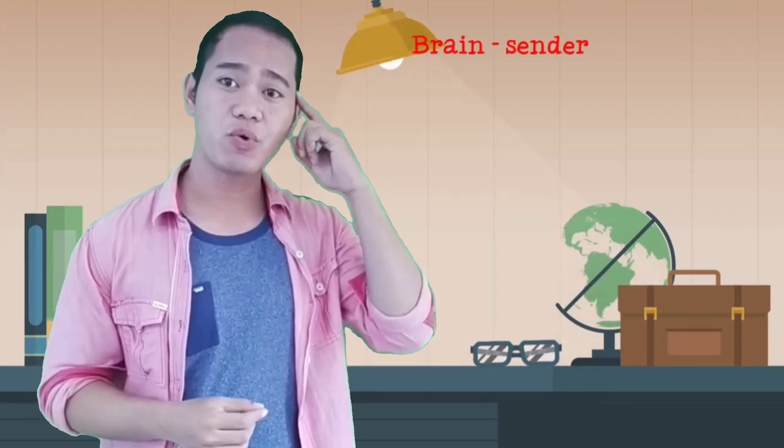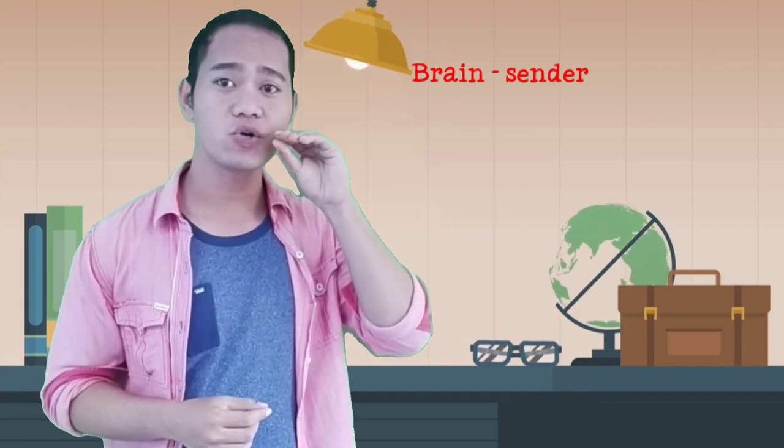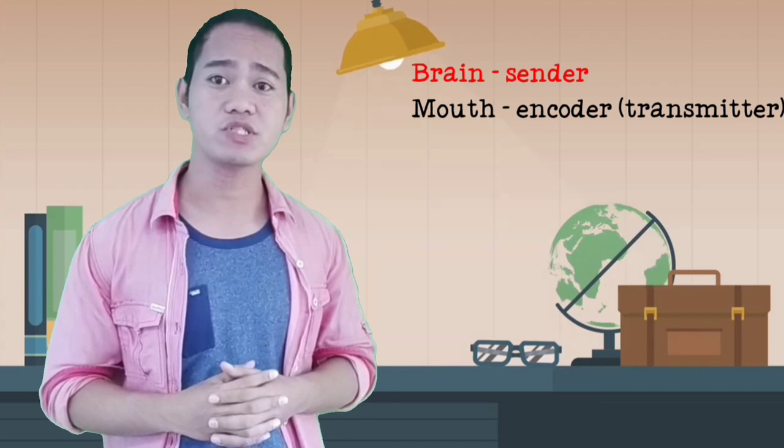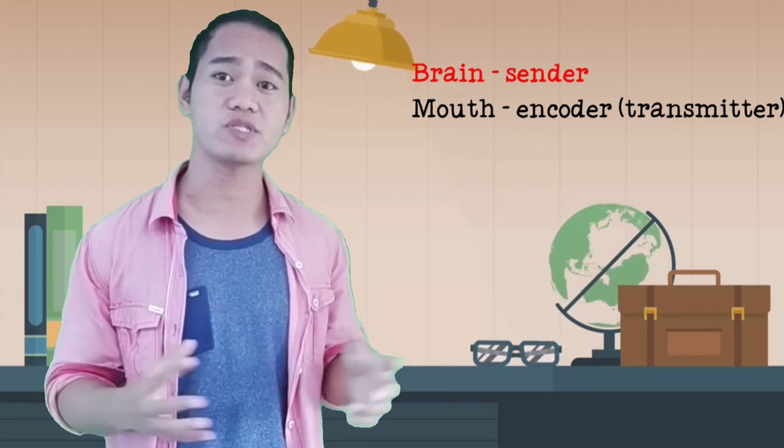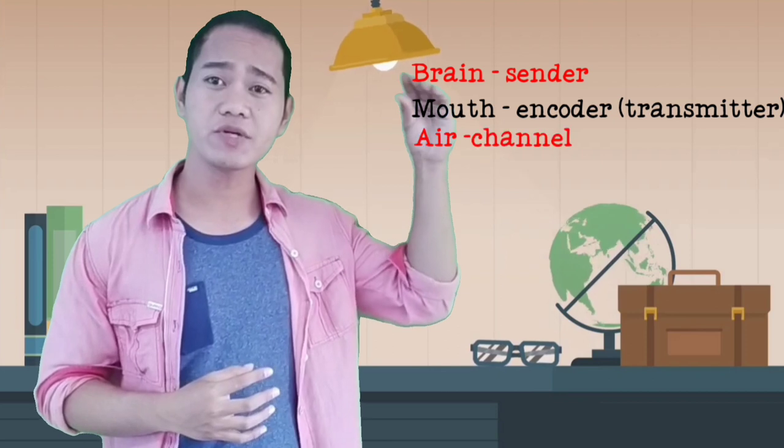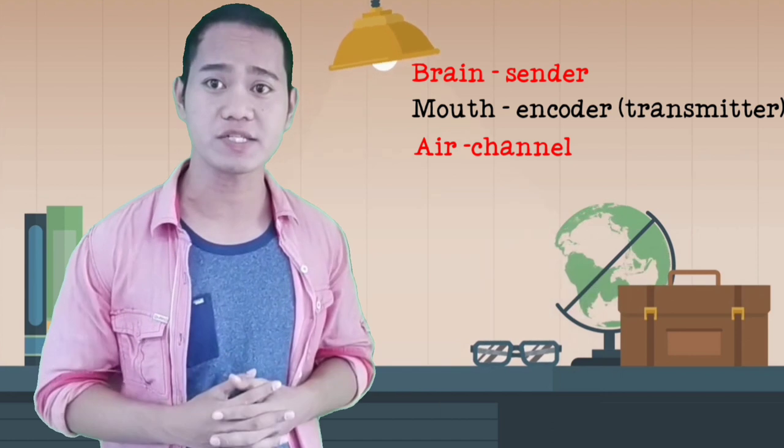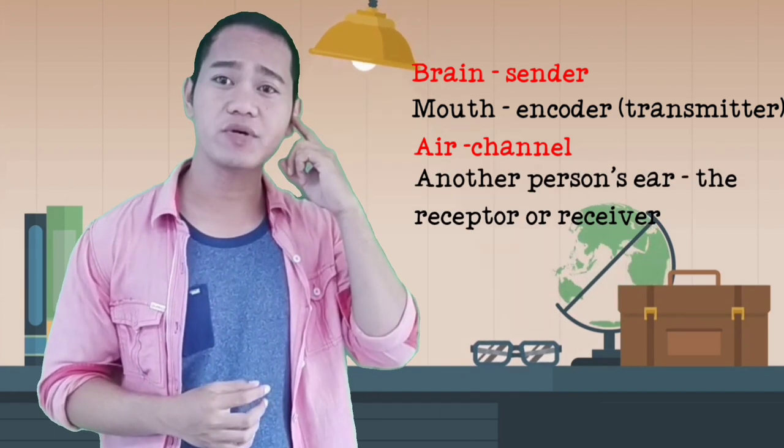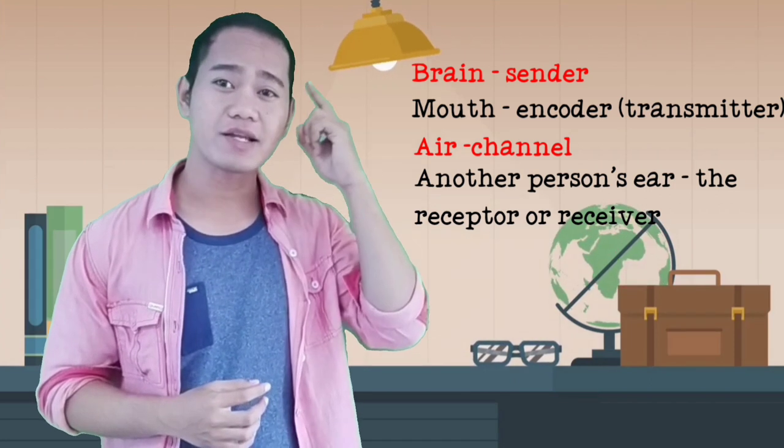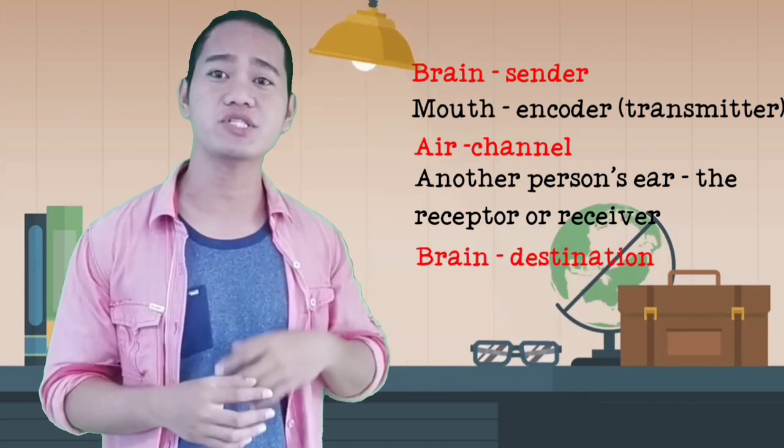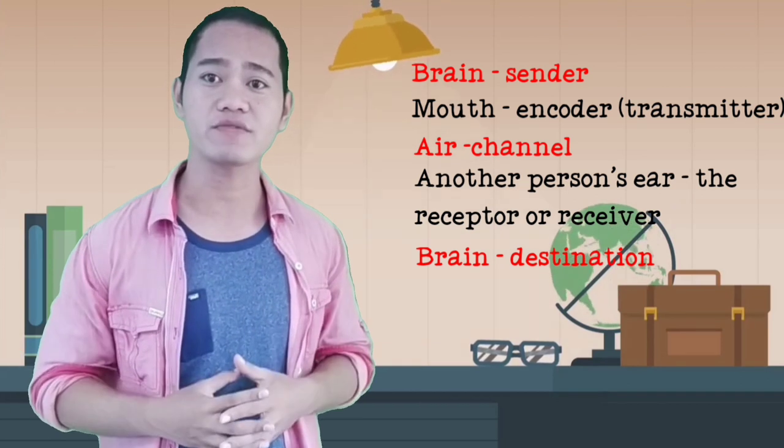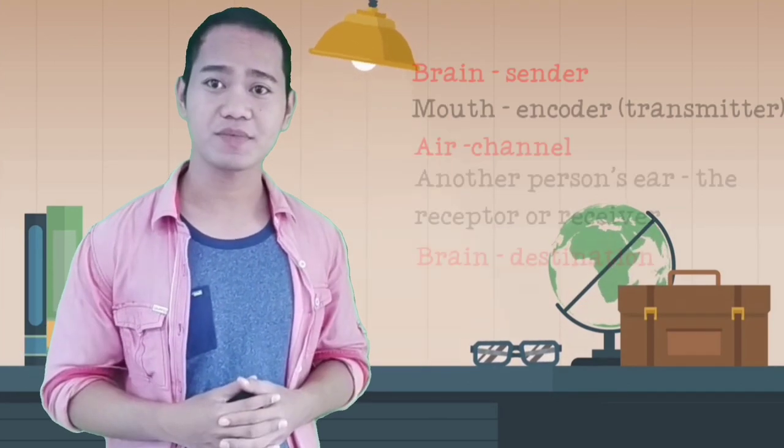Still confused with the idea of transmitter and the presence of technological channel in the given examples? A simpler explanation would be that your brain is the sender, your mouth is the transmitter which encodes using words or sounds understandable to the receiver. Air is the channel without which there would be no sound waves and thus the message won't be able to reach the receiver. Another person's ear is the receptor or the receiver, and his brain is the destination which converts into message the sound waves which act like codes in a machine. That simple.